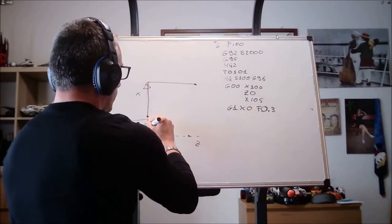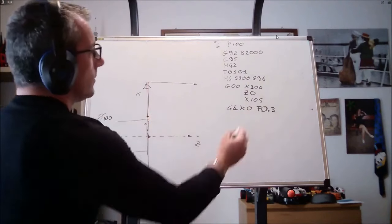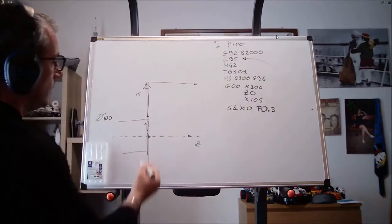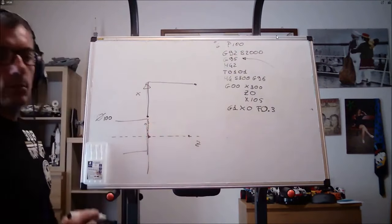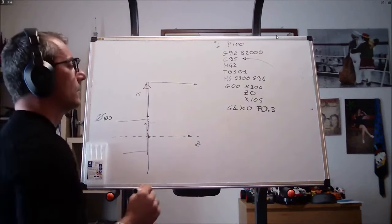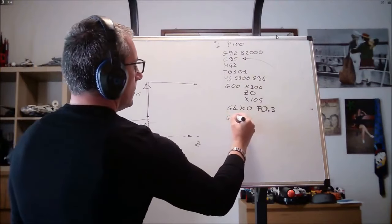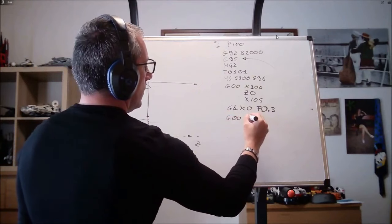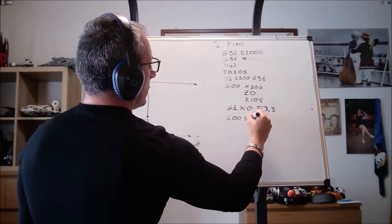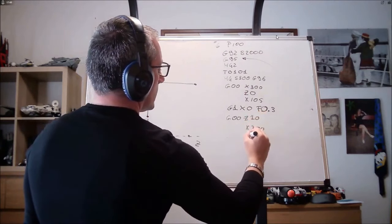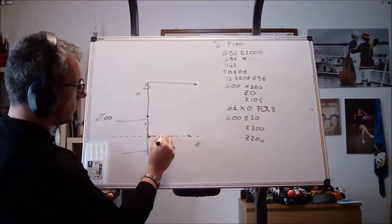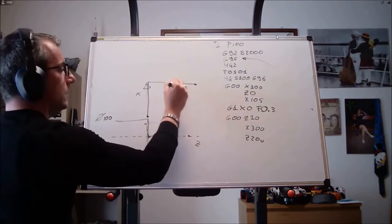So from here, working at 3 tenths per revolution. 3 tenths per revolution is determined by F0.3 in conjunction with G95. Our machine will start facing. Once I get here, I will return to G0 and I can decide the path to take. X300, Z10. So in rapid I go to Z10, rise to X300 and return to Z200.